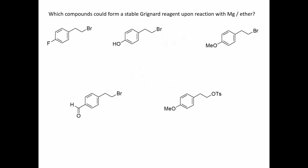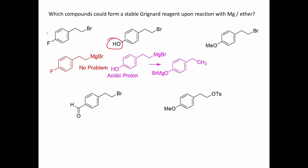Let's do a question: which of these compounds could form a stable Grignard reagent upon reaction with magnesium and ether? The first one has an extra halogen, but fluorine doesn't really react with magnesium or with nucleophiles, so this one would be no problem — a perfectly stable Grignard reagent. The next one has an active OH group — we cannot make a Grignard reagent here because of this acidic proton.